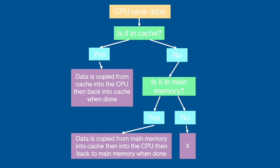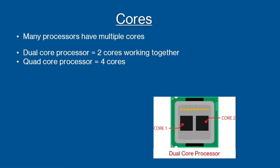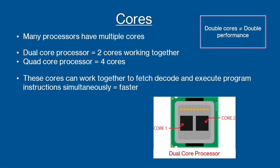The last factor we're going to discuss is processing cores. Many processors have multiple cores. A dual core processor has two cores working together, whereas a quad core has four. These cores can work simultaneously, fetching, decoding and executing at the same time. However, remember that double cores does not necessarily mean double the performance, as some cores have to wait on others to catch up.